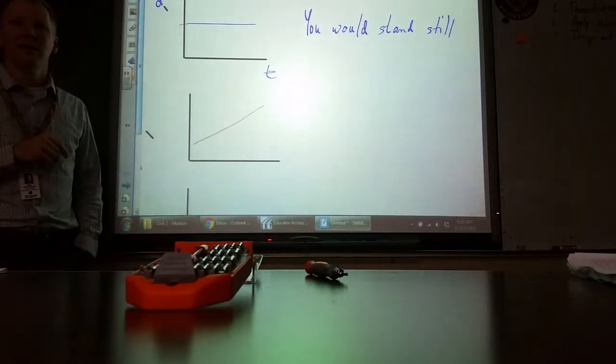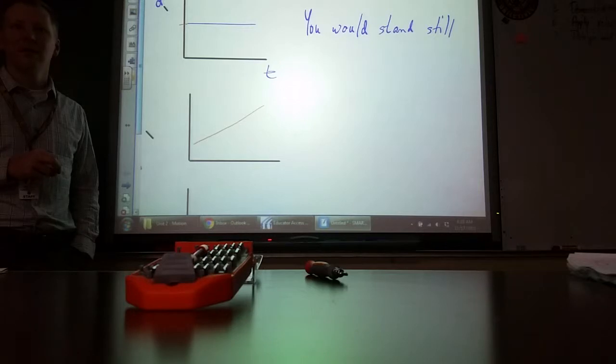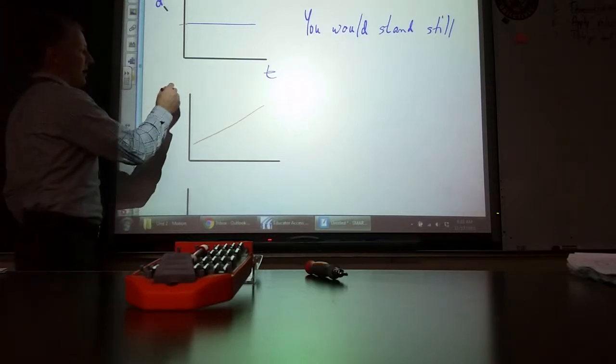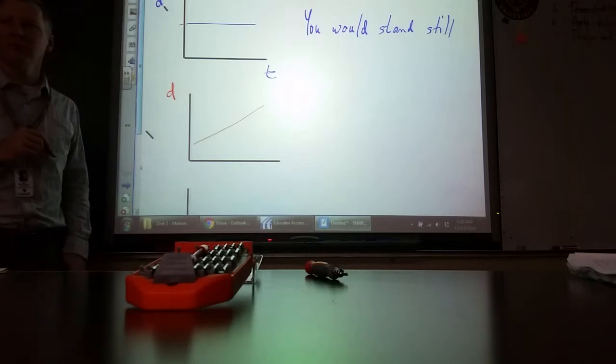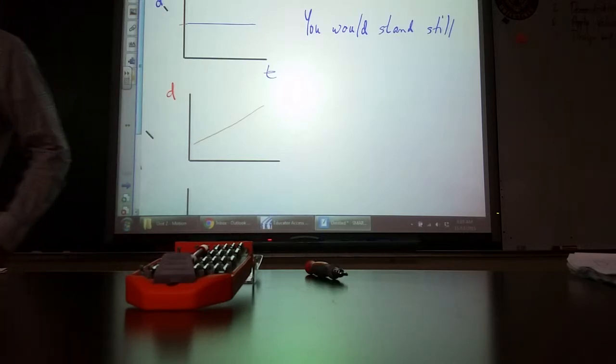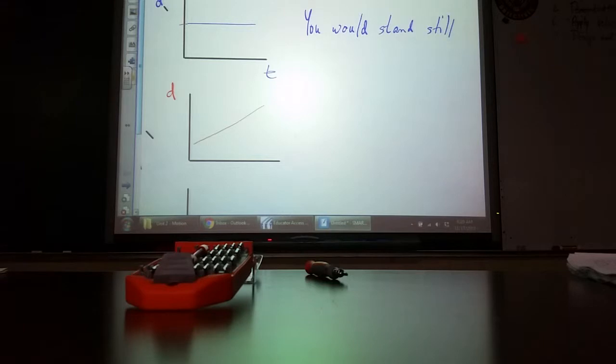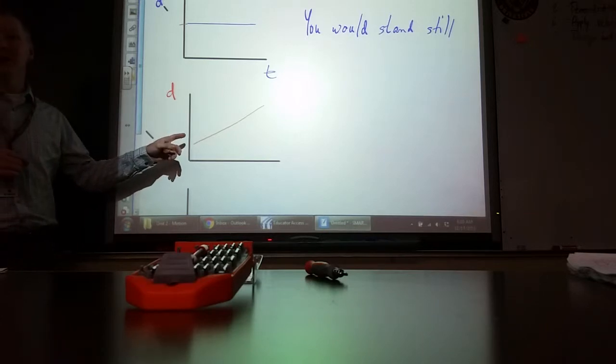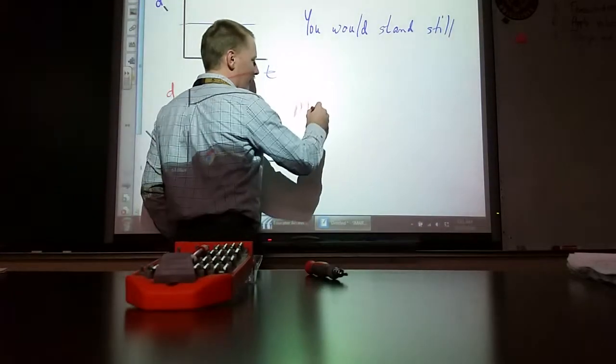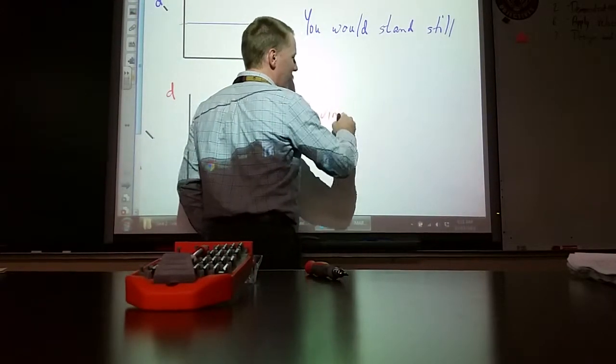But how do you know it's towards the wall? Because every velocity has a positive direction. The positive direction will be going towards the wall. Okay, now what is this distance measuring? What is that displacement measuring in our lab? What was it measuring? Distance between you and the wall. What's happening to the distance between you and the wall here? Staying. Okay, so what direction must you be going? Backwards, backwards.